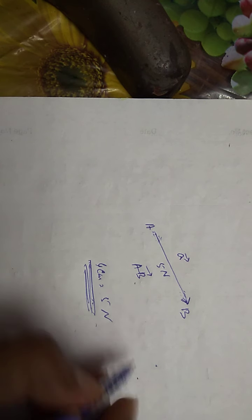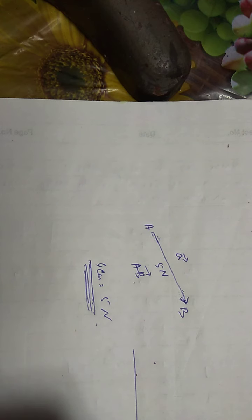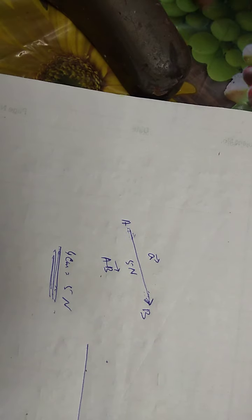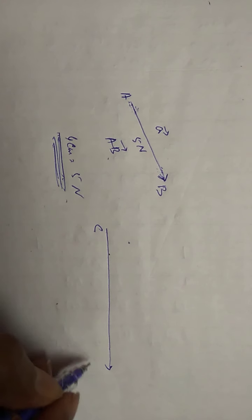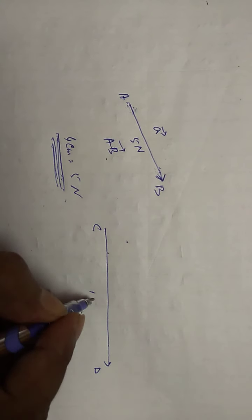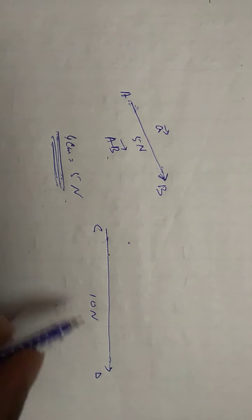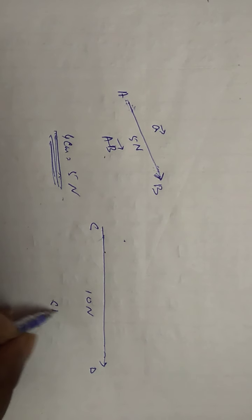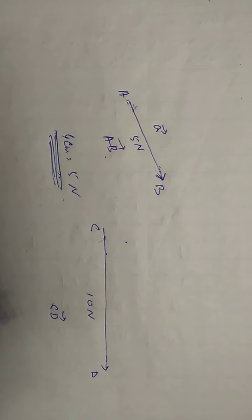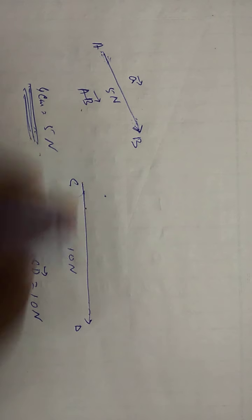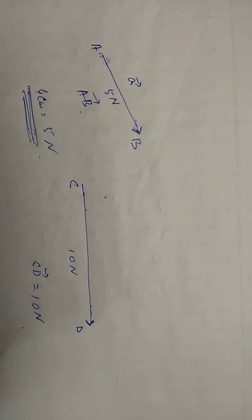So if you want to represent 10 Newton, you have to draw an 8 centimeter line, and your 8 centimeter line will represent 10 Newton. This can be written as vector CD, and your CD is 10 Newton. The arrowhead gives the direction of your vector — this way vectors are represented.